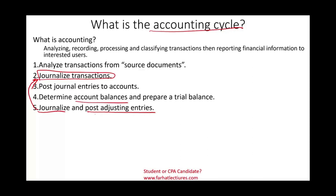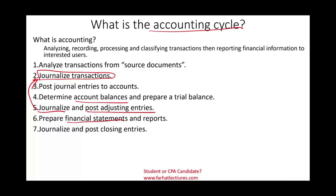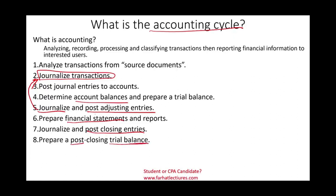After the trial balance, we journalize and post adjusting entries to make sure all accounts are up to date. Then we prepare our financial statements and various reports. After the financial statements, we journalize and post closing entries — we close the period and zero out the temporary accounts: revenues, expenses, and dividends. Then we prepare a post-closing trial balance with only the permanent accounts, and the process starts again.